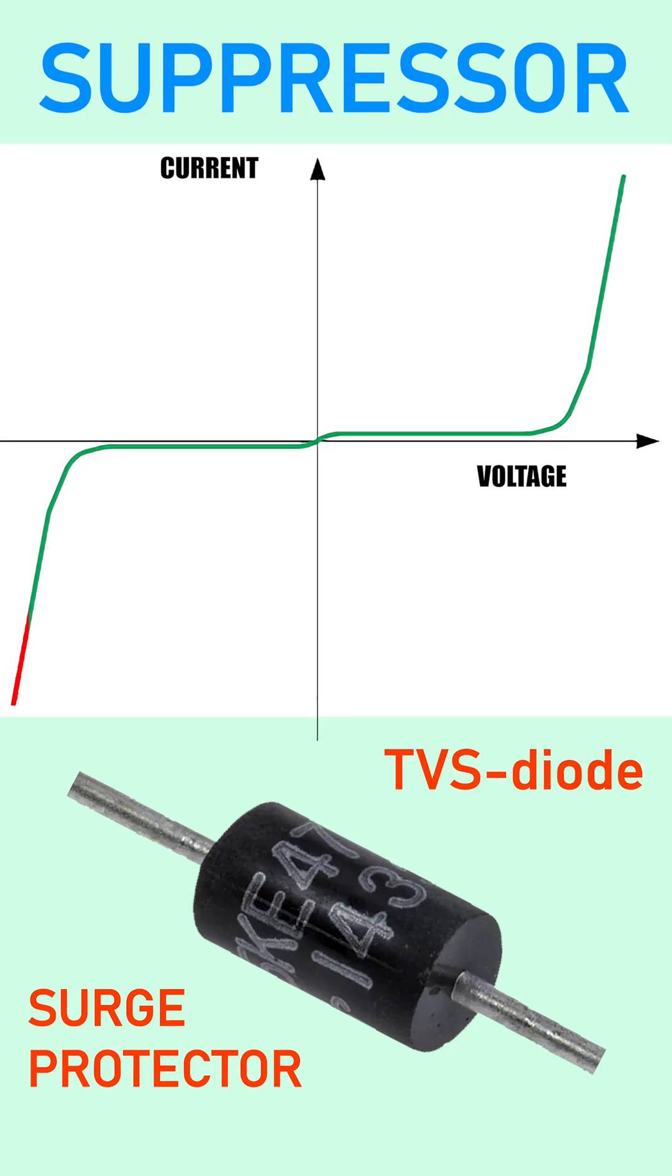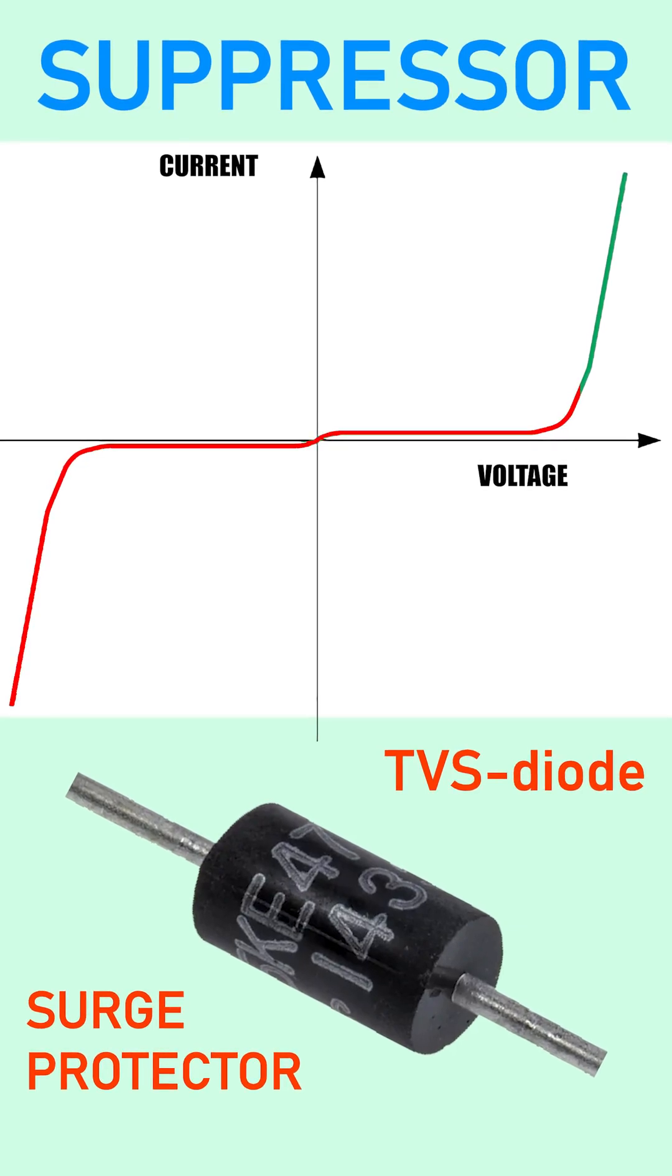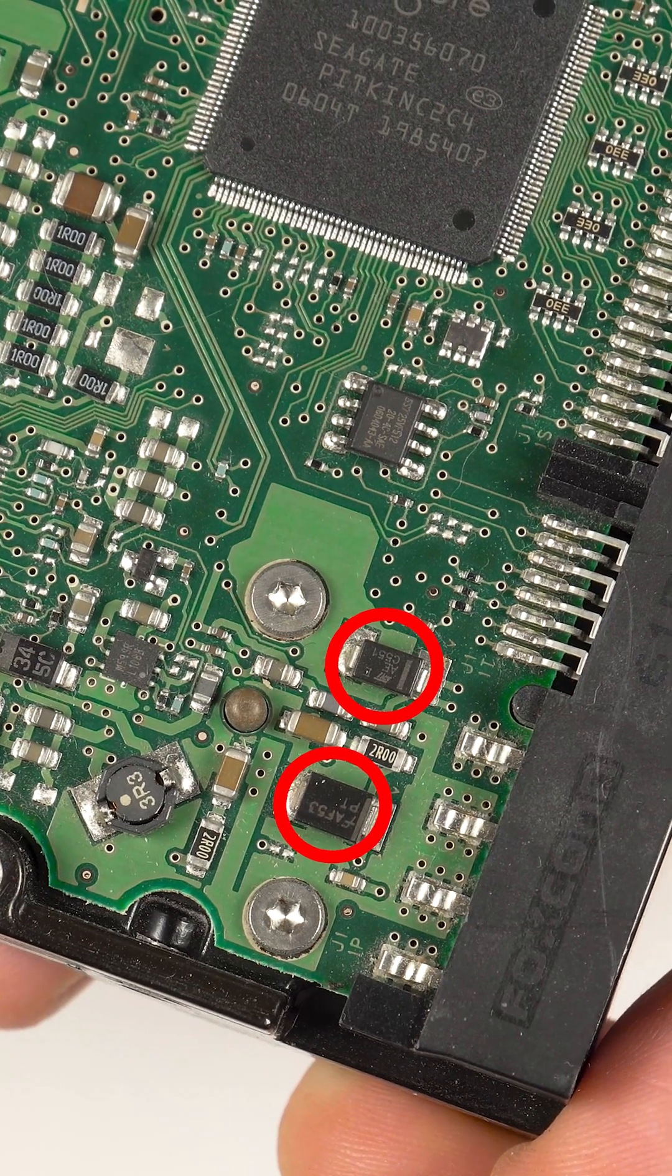A suppressor is another type of surge protector. It works in a similar manner but is faster. You can find suppressors in hard disks, for example.